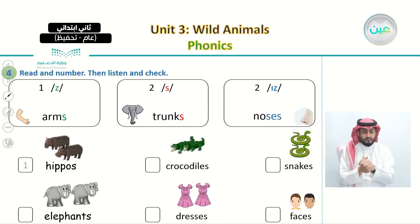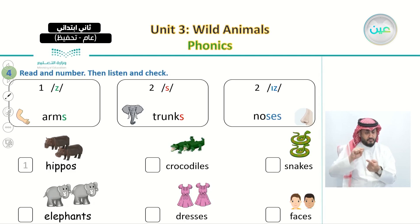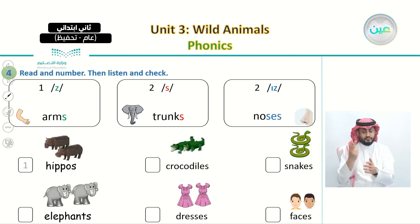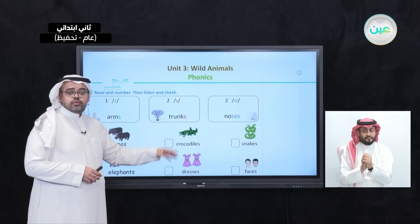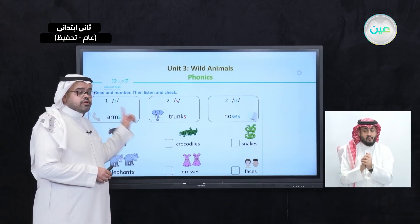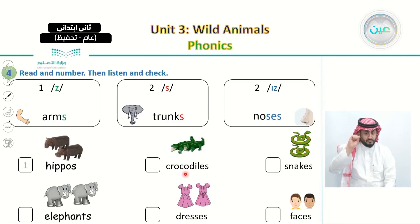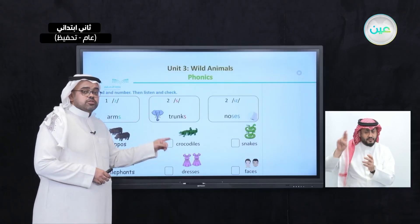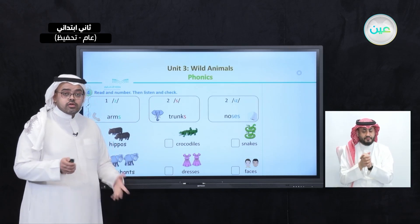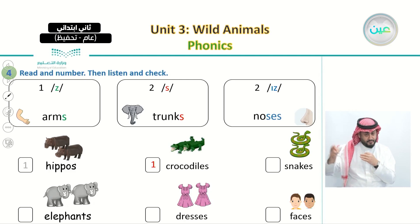Number one is already answered: hooves, which matches the first sound — hooves ends with the Z sound. Now let's listen to the second word: crocodiles. Say with me: crocodiles. What do you think — crocodiles matches which of the three sounds? It of course matches the first sound that ends with Z sound — crocodiles.